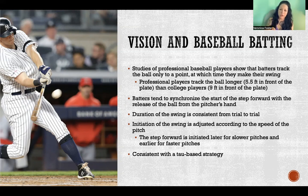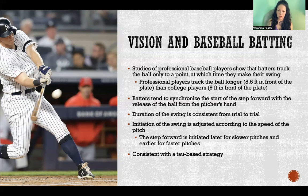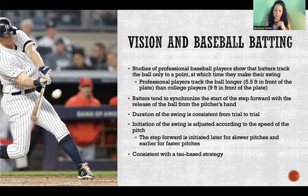When the pitcher is throwing the ball, the batter is using tau to estimate time to contact — essentially estimating the speed of the pitch. They initiate their swing and take that first step forward at different times depending on how fast they determine the pitch to be traveling. The duration of the swing will be the same, but they'll initiate a little bit later if the pitch is slower and a little bit earlier if it's a fast pitch.